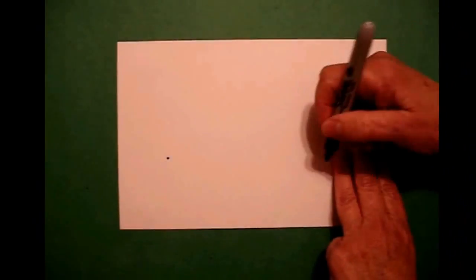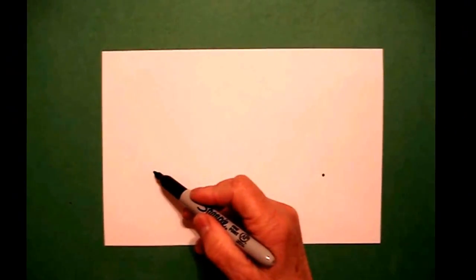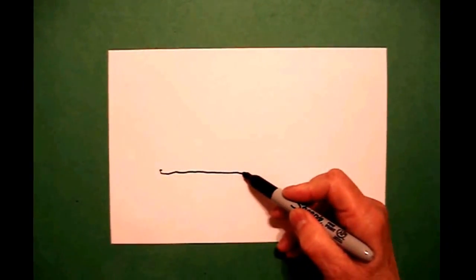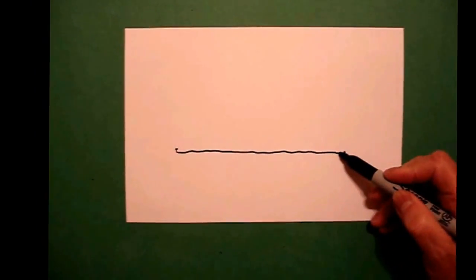I'm going to take three fingers on the left and put a dot, and three fingers on the right and put another dot. I go back to the left and I'm going to draw a slightly wavy line all the way to the right.